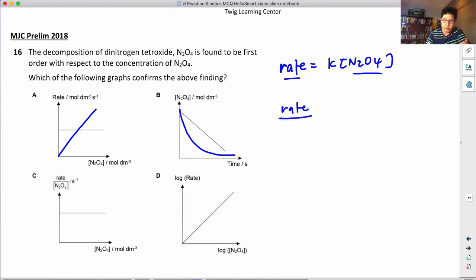If you write it in a different way like this: rate over N2O4 equals K. So K is a constant, so this is actually correct because rate over N2O4 equals K which is a constant. So the answer is going to be C. But let's look at why it's not D.